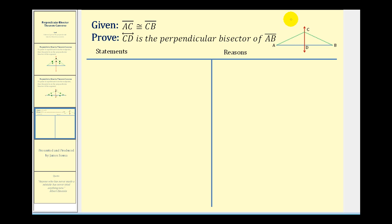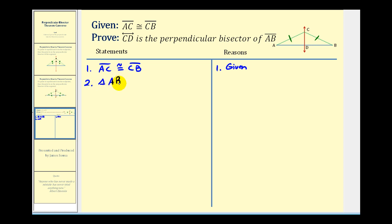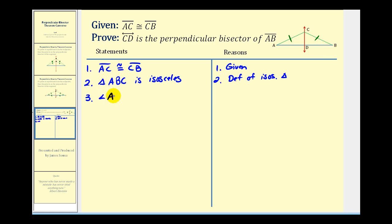We're given that segment AC is congruent to segment CB, and we want to prove that line CD is the perpendicular bisector of segment AB. Step 1 states the given. Step 2: triangle ABC is an isosceles triangle, by definition of an isosceles triangle. Step 3: angle A is congruent to angle B, by the isosceles triangle theorem.